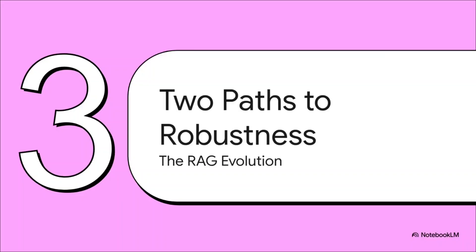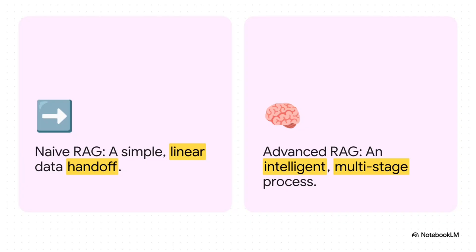It wasn't about throwing the whole idea out, but about making it smarter, more resilient. This led everyone down two new, very distinct paths to building more robust AI. We saw a real philosophical shift — moving from a simple, linear handoff, just blindly tossing documents at the LLM, to a much more intelligent multi-stage process. The new goal wasn't just to find some context; it was to maximize the signal-to-noise ratio, carefully curating the absolute best, most precise information for the LLM before it even thinks about writing an answer.